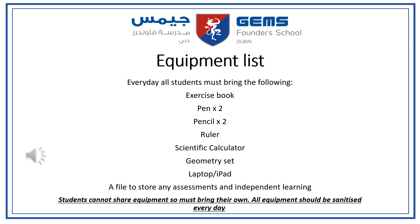Here we have an equipment list which is shared with students at the beginning of each year. It is important that students bring everything on this list as at any time during a lesson they could be required to use some of this equipment. It's especially important to bring a scientific calculator — one of the Casio calculators works well, or the ClassWiz. They will be required to use one in both of their papers for their exam, so it is important that they get used to using them within the classroom first. Also, a file has been added at the bottom just to store any assessments and QLAs which will be used for revision before exams.